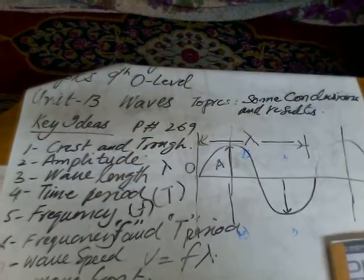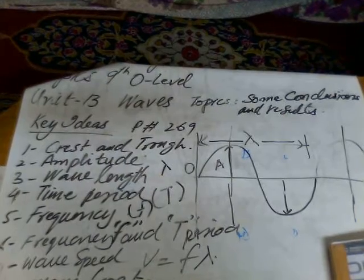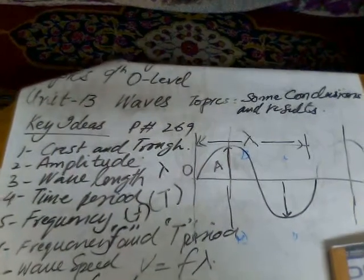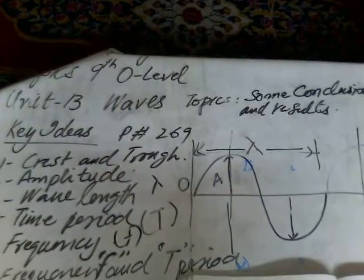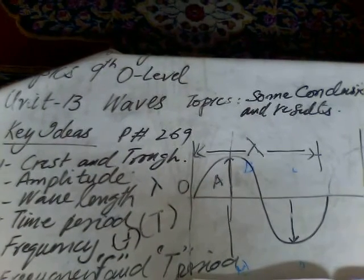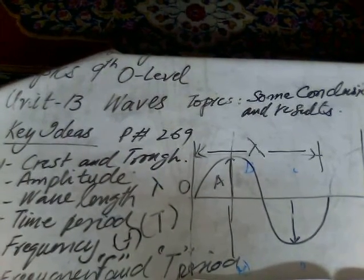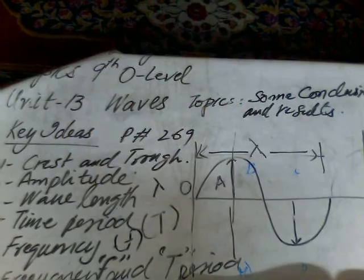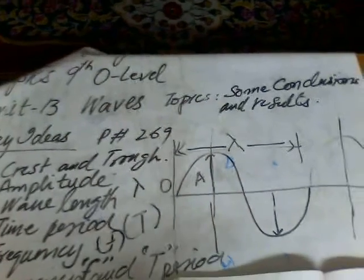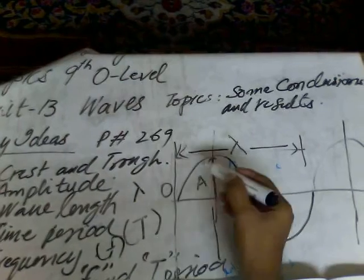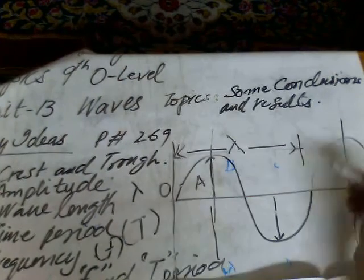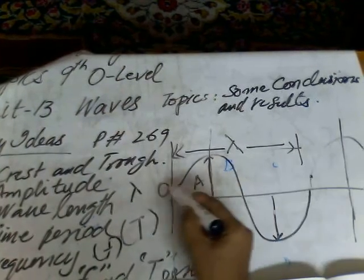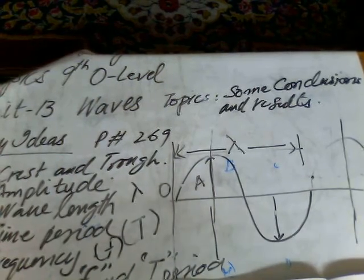The most important but difficult to understand is the wavefront. Wavefront is an imaginary line on the wave that joins all adjacent points that are in phase. Suppose here we have two waves, crest. This point, this point. If we join all these, this point of the whole wave, 10 waves, 20 waves, 1000 waves, 10,000 waves.